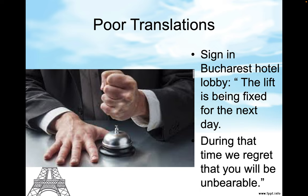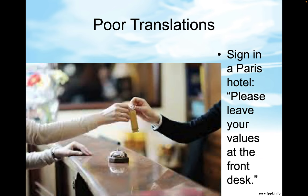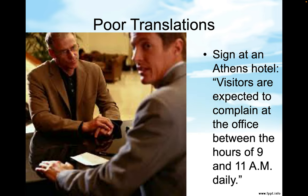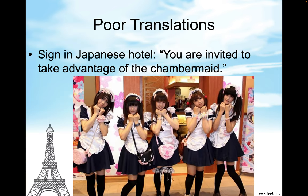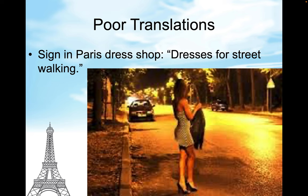A sign in a Paris hotel reads: 'Please leave your values at the front desk.' A sign at an Athens hotel reads: 'Visitors are expected to complain at the office between the hours of 9 and 11 a.m. daily.' A sign in a Japanese hotel reads: 'You were invited to take advantage of the chambermaid.' And a sign in a Paris dress shop reads: 'Dresses for street walking' — street walking, of course, refers to prostitution.